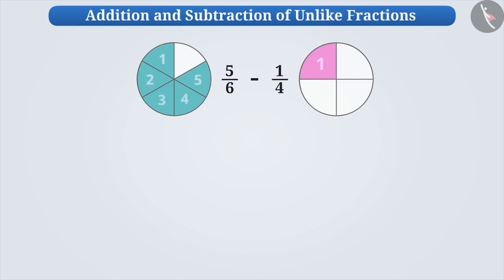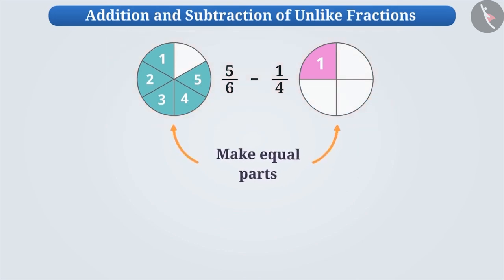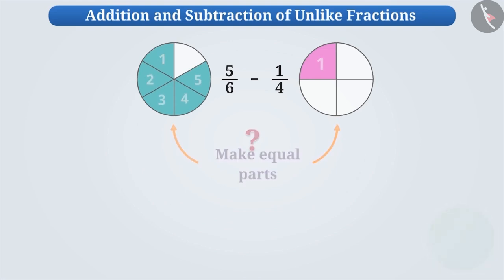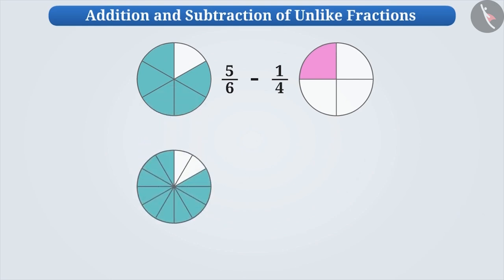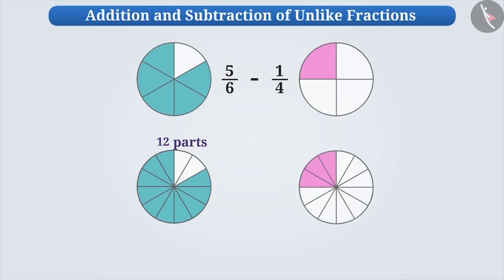Since the number of parts in these circles is not equal, we cannot subtract one by four from five by six. So first, we make the number of parts equal. If we divide each of these six parts into two parts, then we get twelve equal parts. Similarly, if we divide each of these four parts into three parts, then we get twelve equal parts. Now that the total number of parts is equal, we can subtract them.